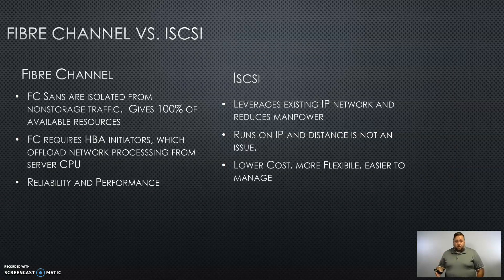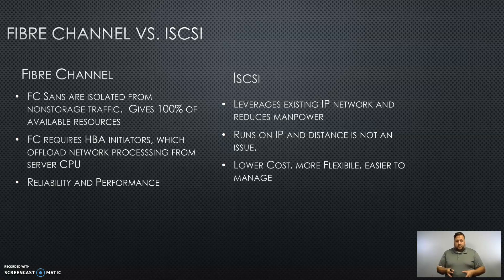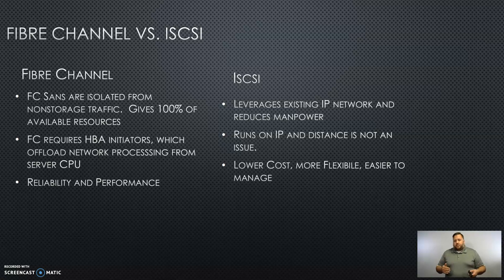Let's look at the differences between Fiber Channel and iSCSI. Fiber Channel is an isolated network that uses specialized hardware to communicate between the SAN and your servers. On the servers, it requires special Fiber Channel cards with HBA initiators, which offload network processing from the server CPU to the card, increasing server performance. It is very reliable due to point-to-point communication and delivers high performance because there is no network congestion as with iSCSI. With iSCSI, you leverage the existing IP network, which reduces manpower and equipment costs — making it the typical choice for small and medium-sized businesses with a reduced budget.